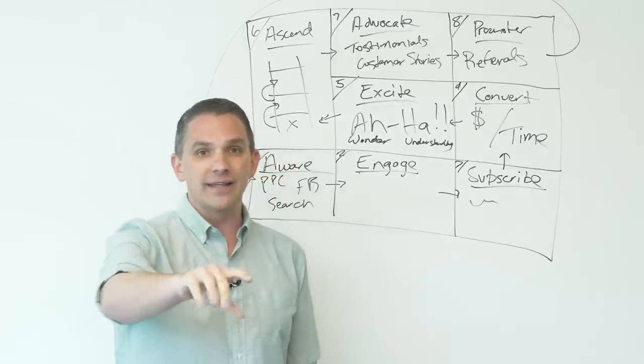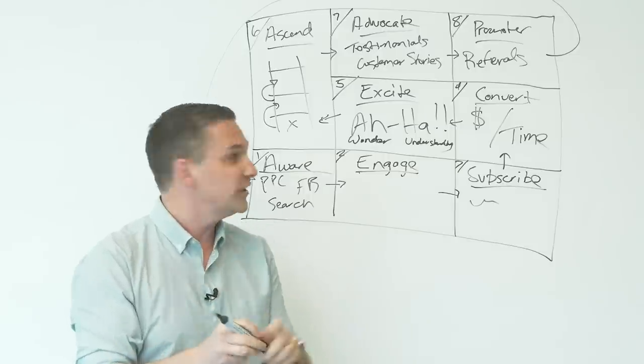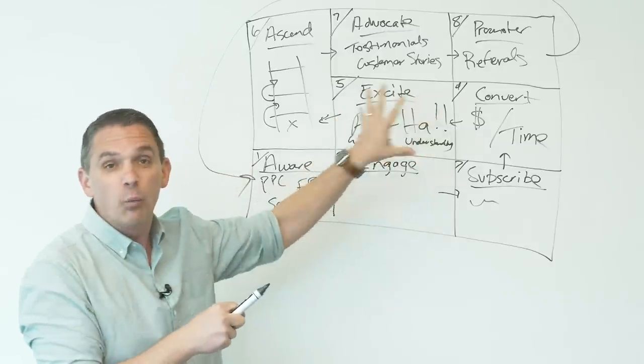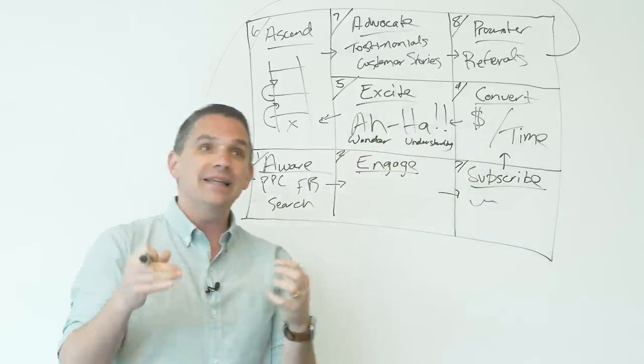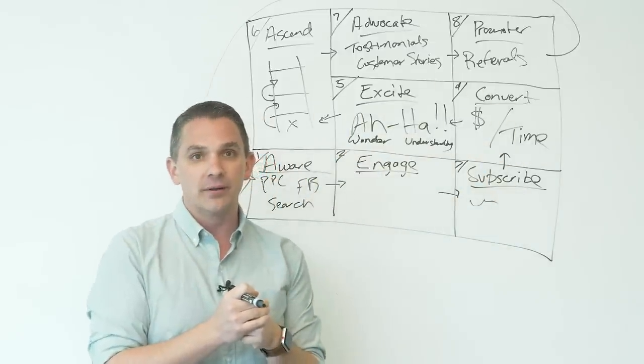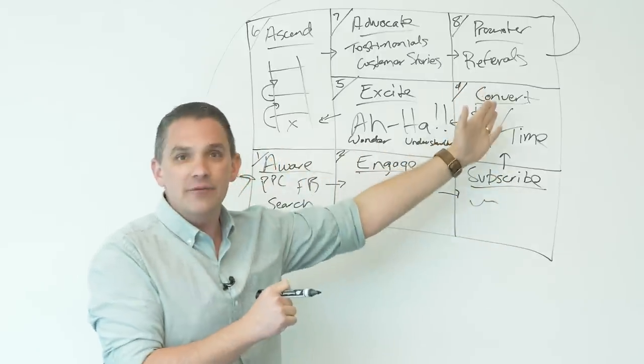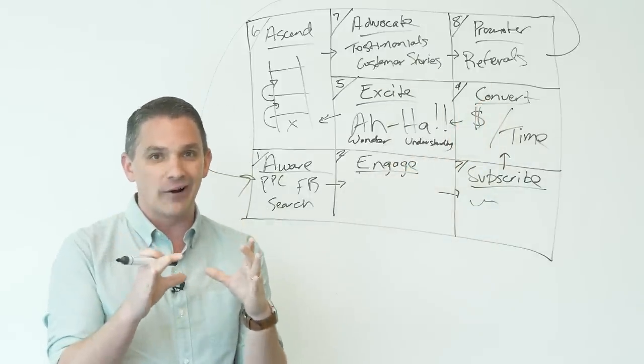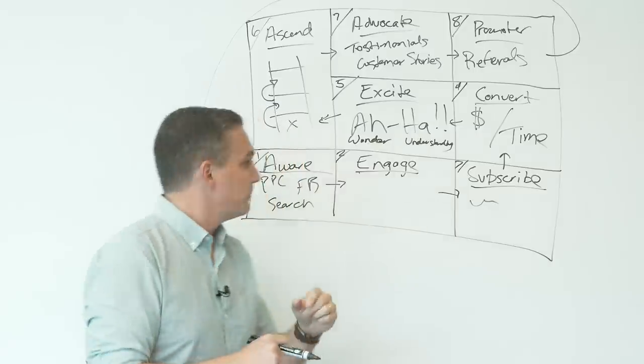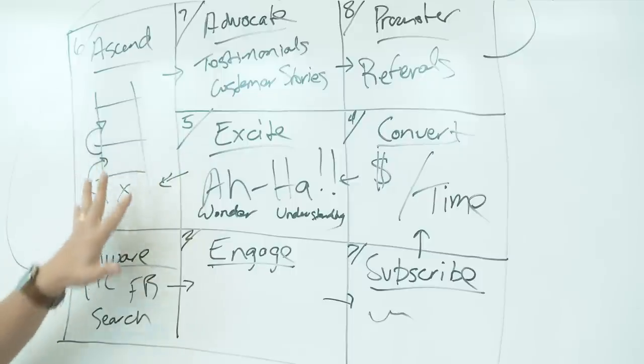And my advice, kind of what I'll leave you with, is pick one box, one area for optimization that you can really dive in. One point in this customer factory where you believe folks are getting hung up. You know, gosh, we're getting a lot of traffic. Engagement's okay. Subscribe's okay. But we're not getting many of them to convert. And focus your optimization efforts in that box and in that area. And I would encourage you, don't start with awareness.